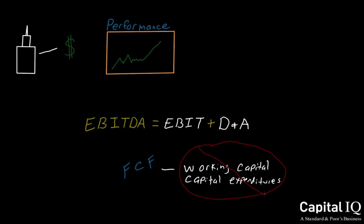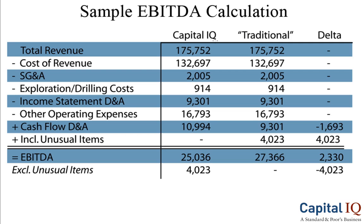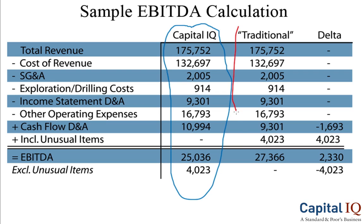So, how do people use it? How is it calculated? This chart provides the calculated values for both Capital IQ's normalized EBITDA and a non-normalized presentation. The chart depicts core items from the income statement in millions of U.S. dollars, in this case for an oil company.